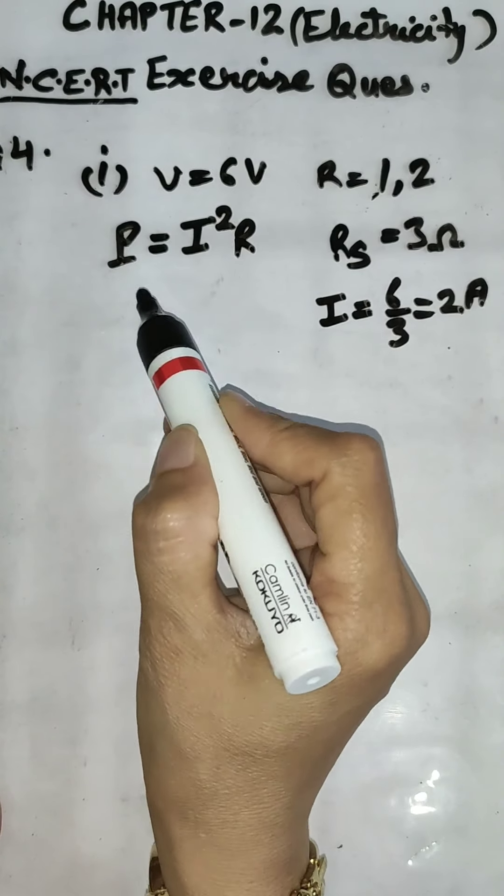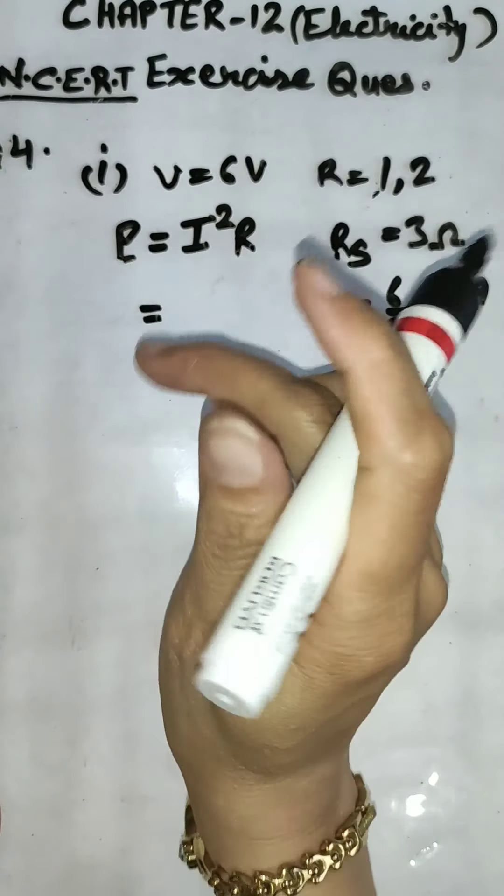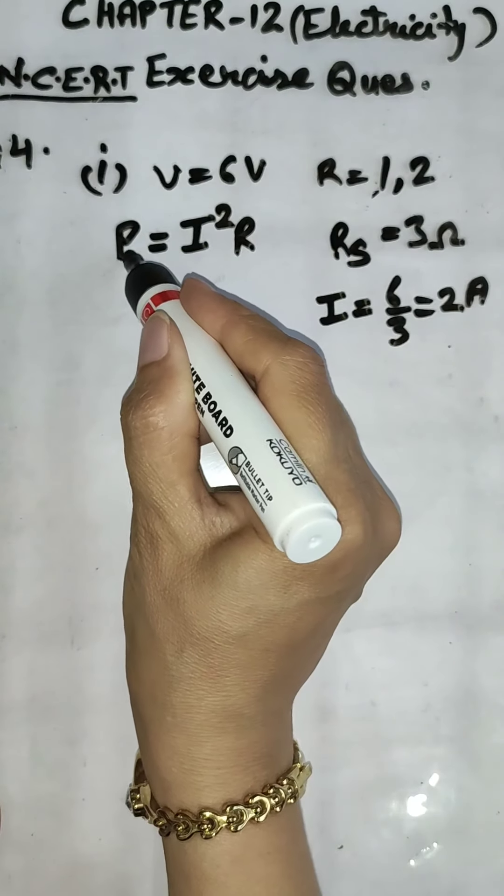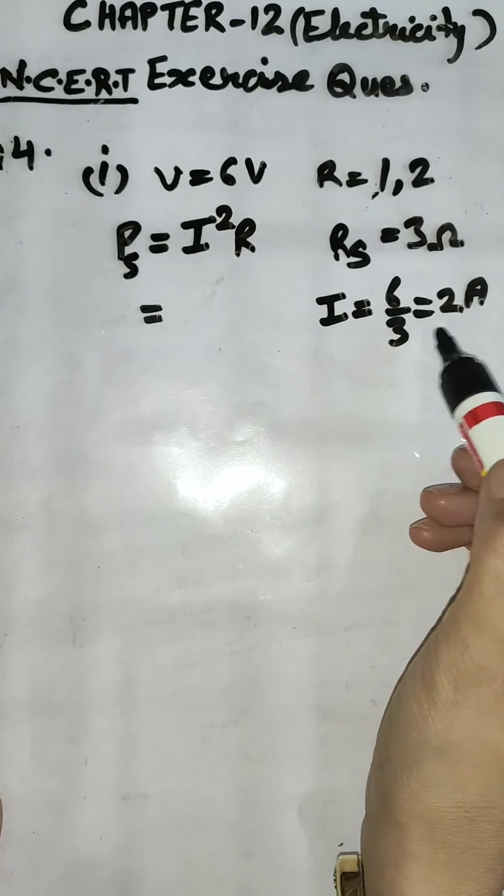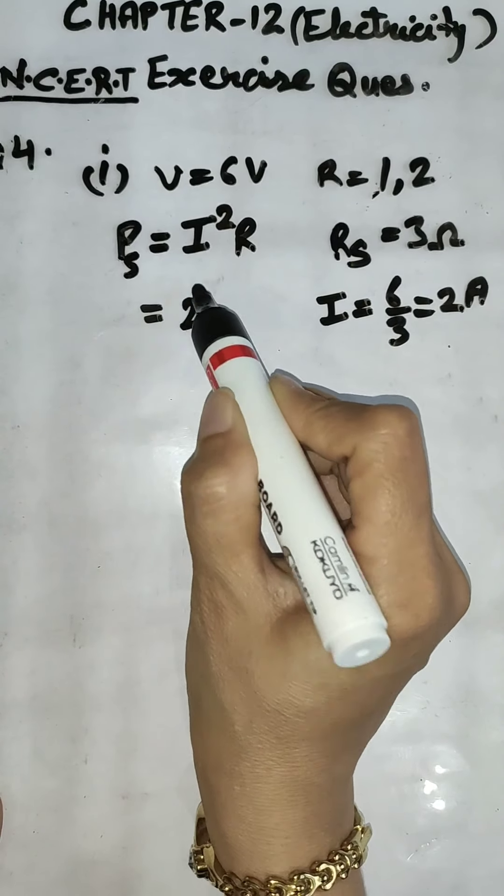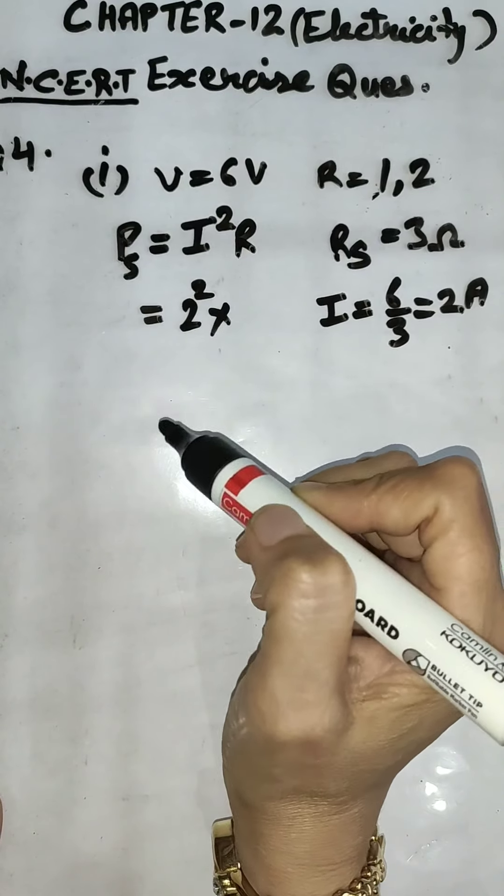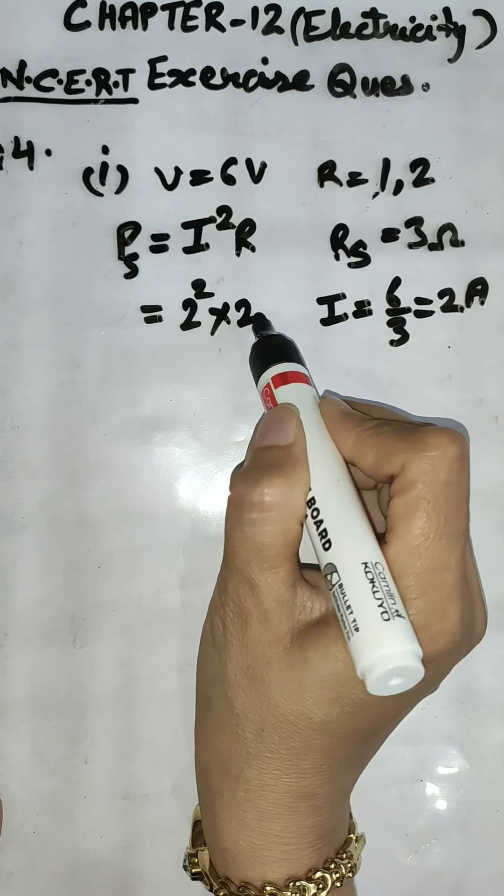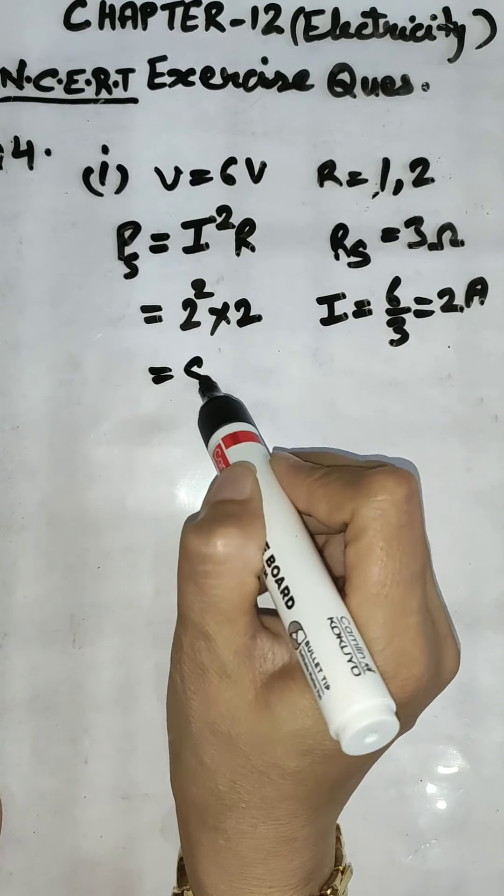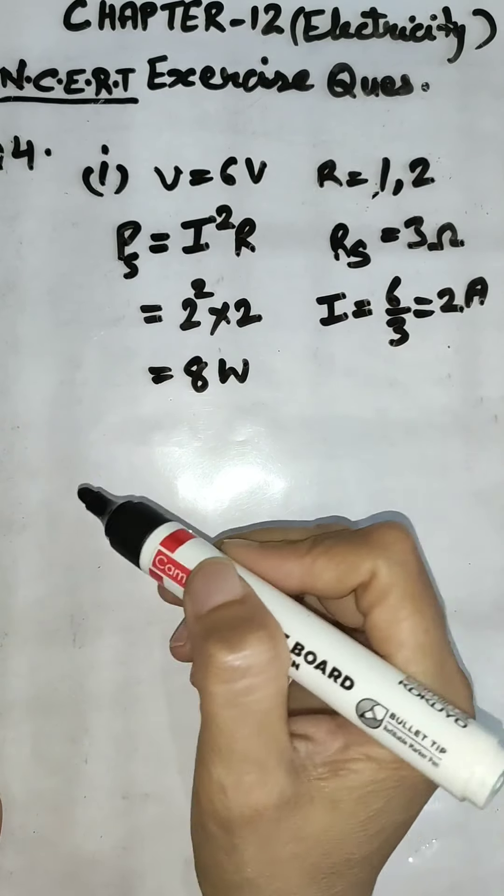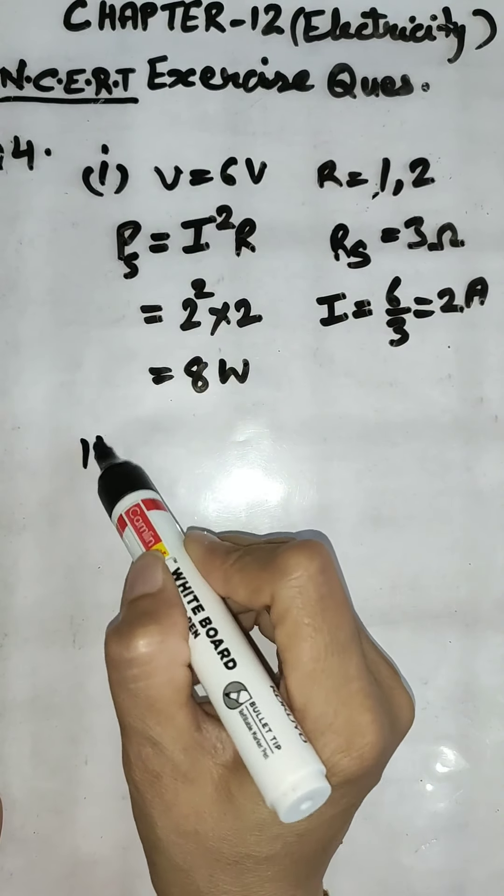Now power in this case, we will write P as I square that is 2 square multiplied by R across 2 ohm we have to calculate. So it is 8 watt.